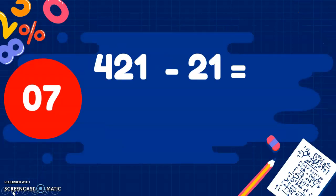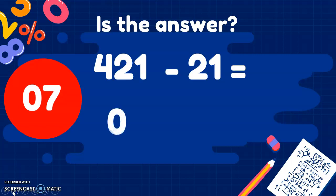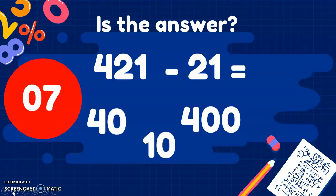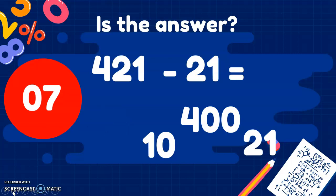Question 7. 421 take away 21. Is the answer 40, 10, 400 or 21? It's not 40, it's not 10, it's 400. Because we're taking away all of the 10s and all of the 1s. So we're left with those 0s appearing again. 400.